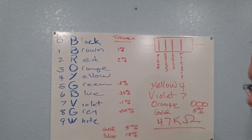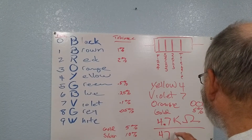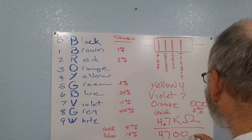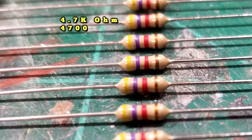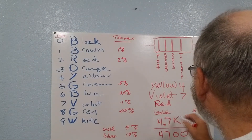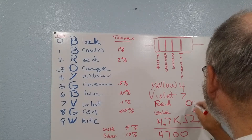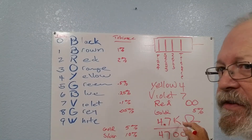Now, 4.7k is also common. If 47k has three zeros, moving the decimal point over gives us 4700. So if you want 4700 ohms, you want two zeros behind it, and two zeros corresponds to red. So yellow, violet, red gives you 4700 ohms — or 4.7k.